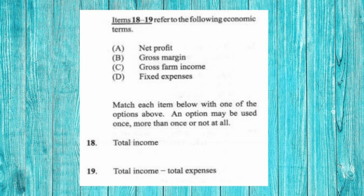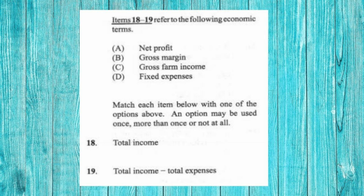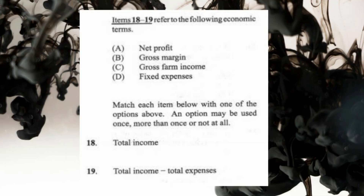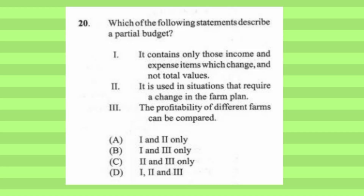Questions 18 and 19 refer to the following economic terms: (a) net profit, (b) gross margin, (c) gross farm income, (d) fixed expenses. Question 18: Total income — the answer is C, gross farm income. Gross farm income means the income presented before the deduction of tax. Question 19: Total income minus total expenditure — the answer is A, net profit. Net profit refers to income after all expenses are deducted, showing either a profit or a loss.